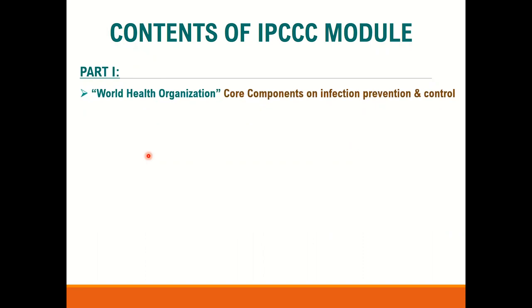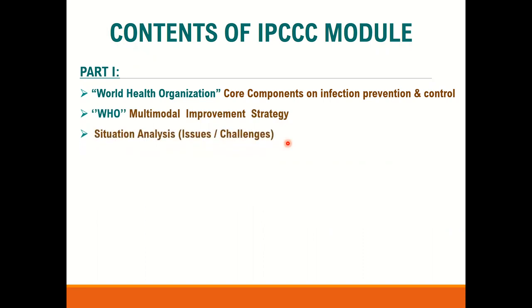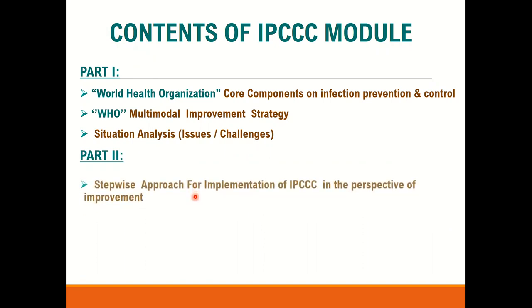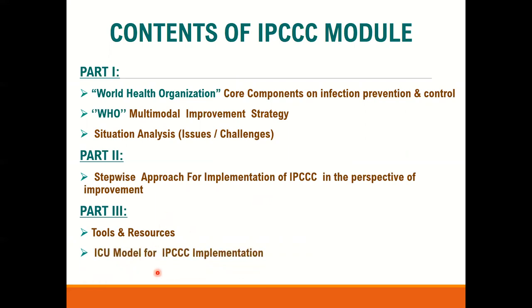This presentation is broadly divided into three parts. In part one, we will discuss the WHO Core Components on Infection Prevention and Control and the WHO multi-model improvement strategy. We will take account of our situation and the issues and challenges. In part two, we will discuss the stepwise approach for implementation of IPC Core Components. In part three, we will share tools and resources designed to ensure uniformity among all hospitals and facilitate the IPC Core Components implementation process. We will also share the ICU model as an example, and conclude by highlighting the most important key points for the implementation process.